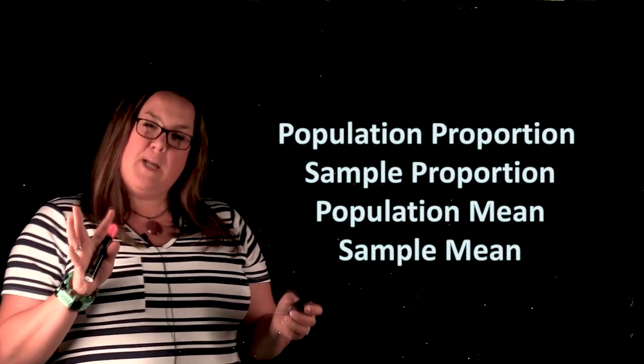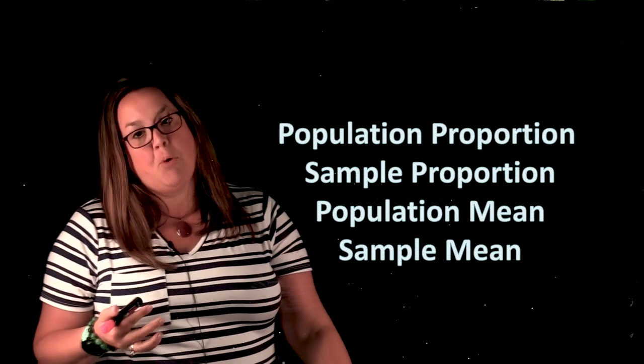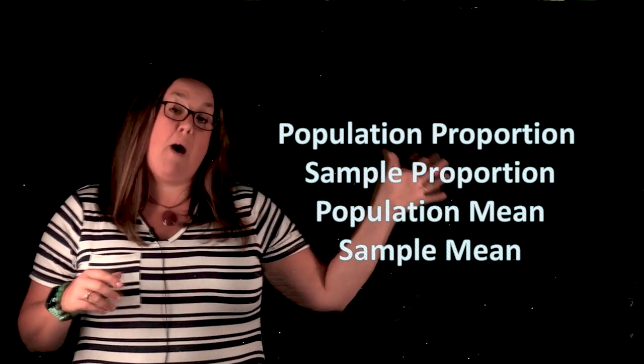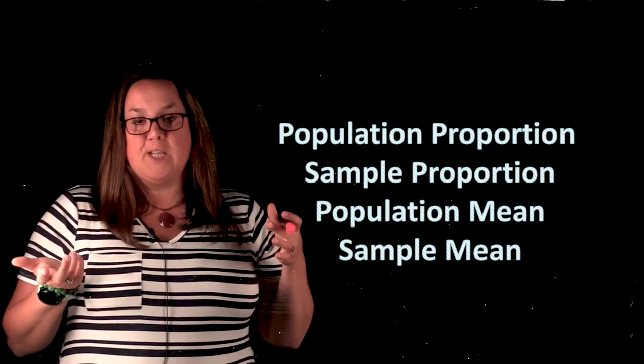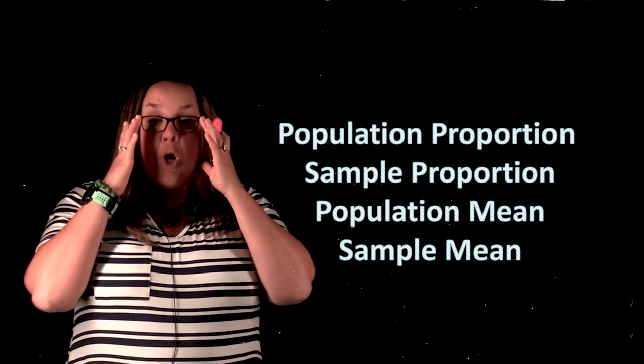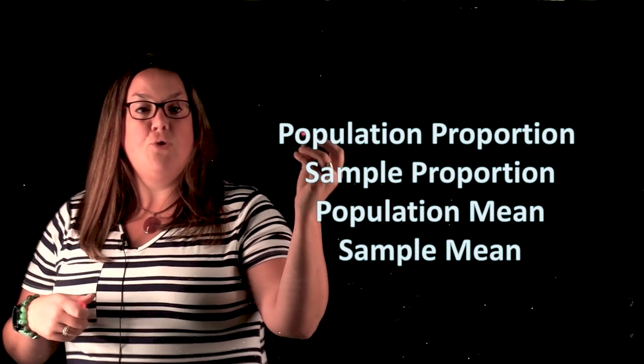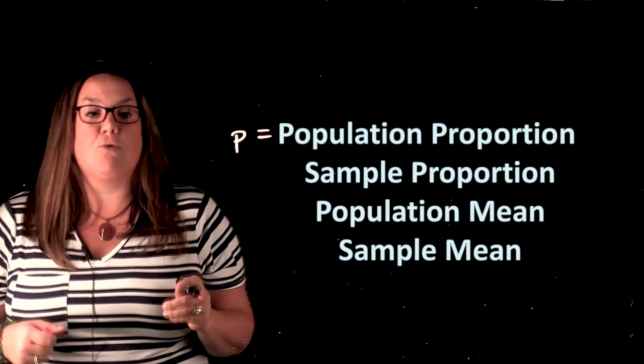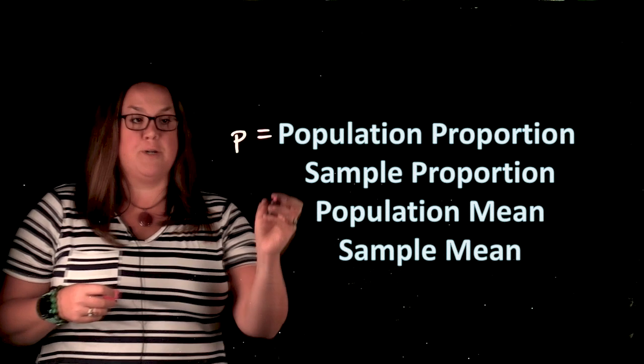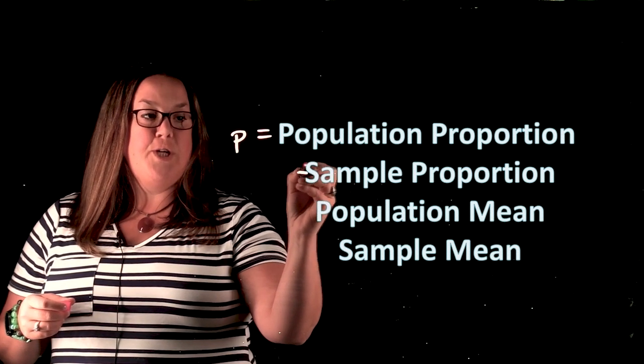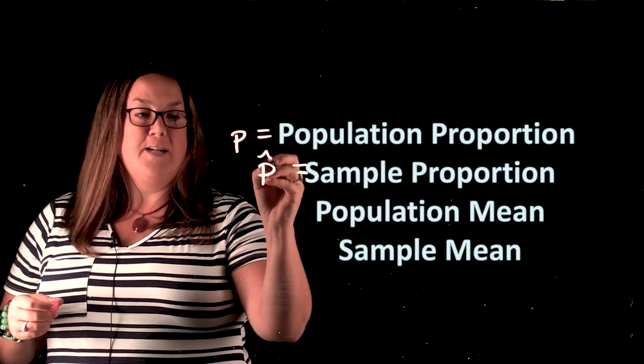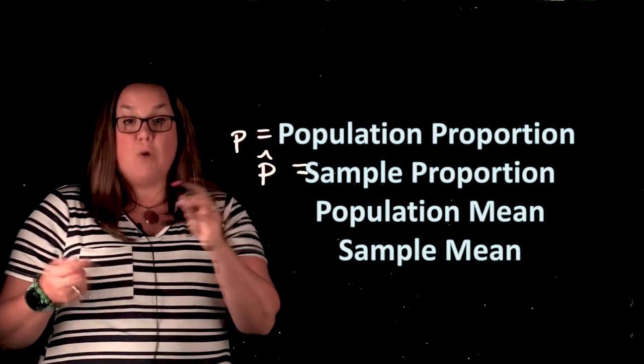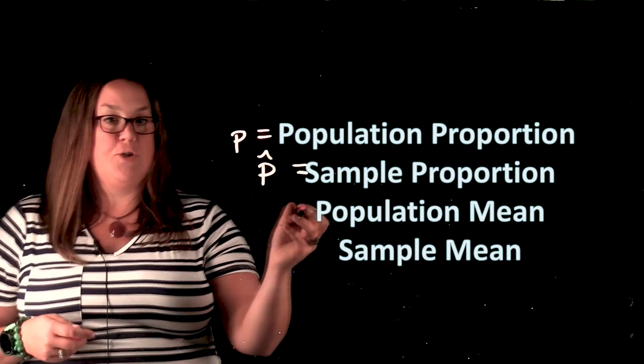So we've talked about some sample estimates, we talked about sample proportions, I talked about population means. We may have not talked about a population proportion yet, but it's just like it sounds. It's a proportion that refers to the population. Notation wise, we use the notation lowercase p to represent that population proportion. The sample proportion, we use the notation p hat and the hat just indicates that we're estimating the value below it. So we're estimating the value of p with p hat, the sample proportion.